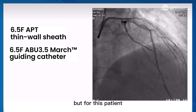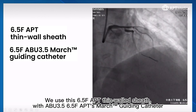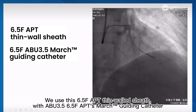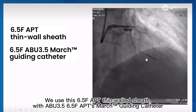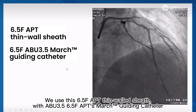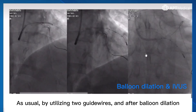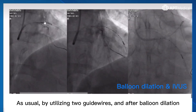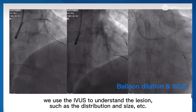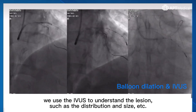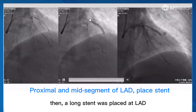But for this patient, we used the 6.5 French APT thin-walled sheath with the ABU 3.5 6.5 French APT Guiding Catheter. As usual, by utilizing two guide wires and after balloon dilation, we used IVUS to understand the lesion — such as the distribution and size — then a long stent was placed at the LAD.